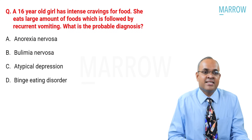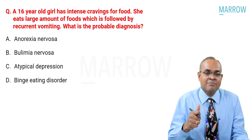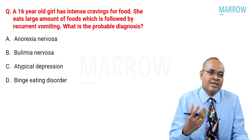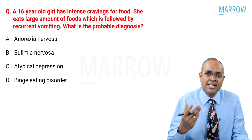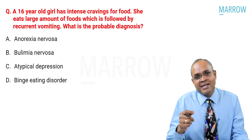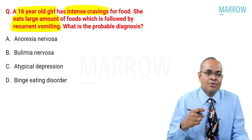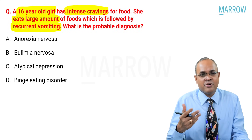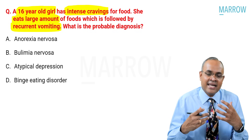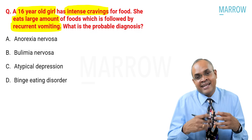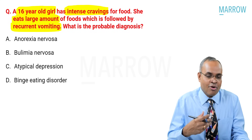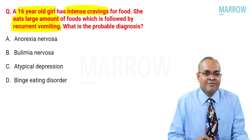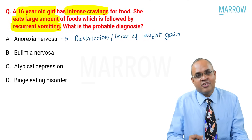Moving to the next question: a 16-year-old girl comes with intense craving for food. She eats large amounts of food followed by recurrent vomiting. What is the probable diagnosis? The key words here are intense craving, binge eating of large amounts, and recurrent vomiting — most probably voluntary induced vomiting.